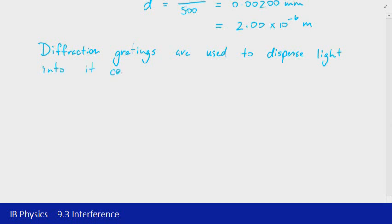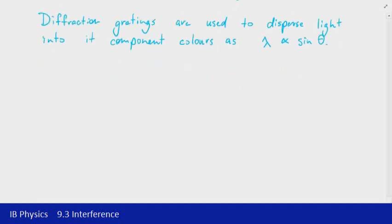And the reason why we get that effect occurring is because of the relationship between wavelength and the angle, because lambda is directly proportional to sin theta. So when we have a greater wavelength, we're going to see a greater deviation of that particular color. And to give that as a better example, let me just include a couple of images here.